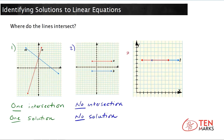And in the third instance, there are two lines, one in red and one in blue, and as you can see, these two lines entirely overlap, which means they are the same line and they will share all of the same points, which means that there are infinitely many solutions, or all solutions.